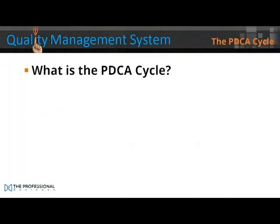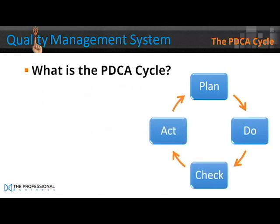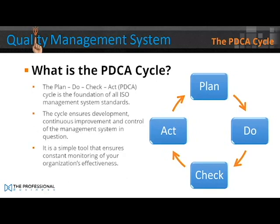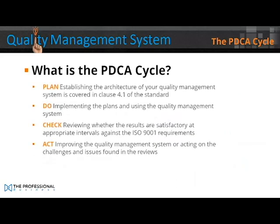What is the PDCA cycle? PDCA stands for Plan, Do, Check, and Act. The Plan, Do, Check, and Act cycle is a foundation of all ISO management system standards. The cycle ensures development, continuous improvement, and control of the management system in question. It's a simple tool that ensures consistent monitoring of your organisation's effectiveness. Plan: establishing the architecture of your quality management system, covered in clause 4.1 of the standard. Do: implementing the plans and using the quality management system. Check: reviewing whether the results are satisfactory at appropriate intervals against the ISO 9001 requirements. Act: improving the quality management system or acting on the challenges and issues found in the reviews.